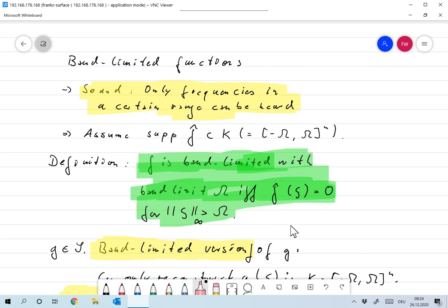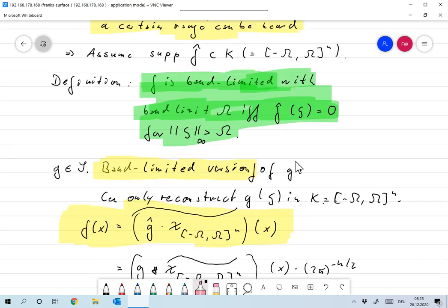Okay, I also want to talk about band-limited versions of some functions. So let's take g in S arbitrary. Then I define an omega band-limited version of g by the idea—well, assume that as in the sound case...